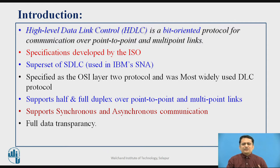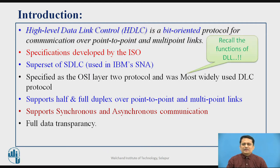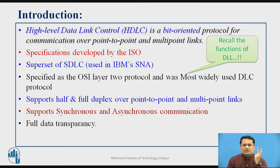Since HDLC is an OSI layer 2 protocol — and OSI layer 2 is the data link layer — recall the functions performed at the data link layer. The various functions are: data link layer does framing, data link layer does error control, data link layer does flow control, and access control. It will be interesting to understand how all those functions are accomplished in this HDLC protocol.